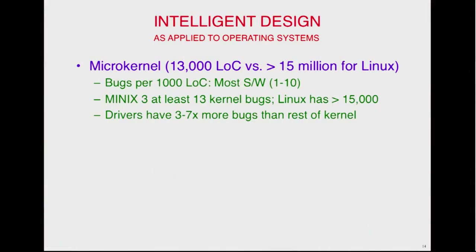There have been a lot of studies of how many bugs per line of code — it's kind of linear. One to ten bugs per 1,000 lines of code is the normal range. You do a really good job and you can get it down to one bug per 1,000 lines. So Minix might have 13 bugs in the kernel, while Linux probably has 15,000 bugs. Not all bugs are fatal — some are just spelling errors in messages. But some are more critical, like the Bash bug that had been in there for 25 years. Drivers tend to have three to seven times more bugs than the rest of the kernel, and 70% of the code is the drivers — that's not a good ratio.